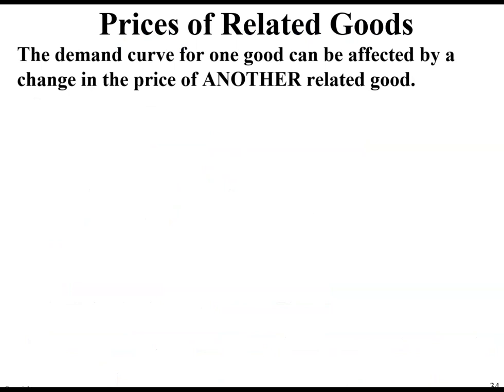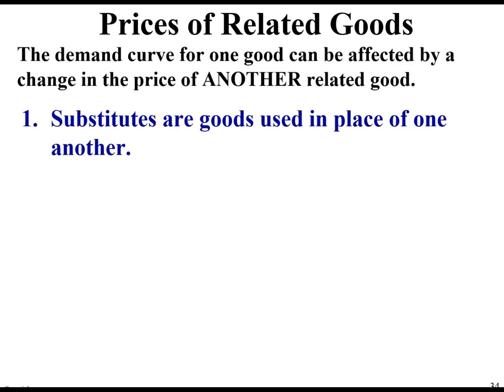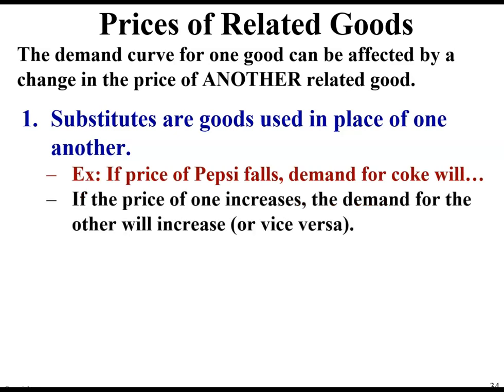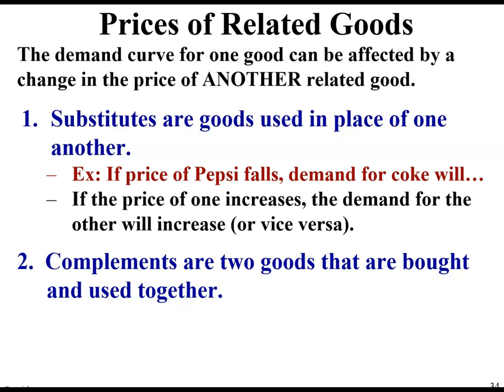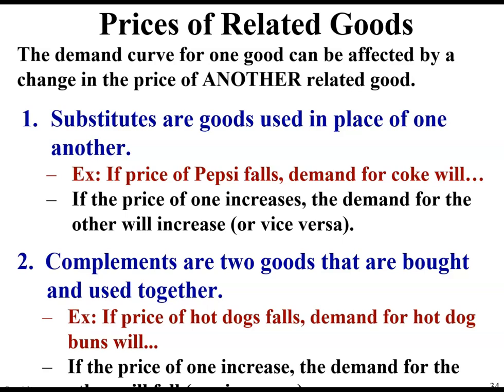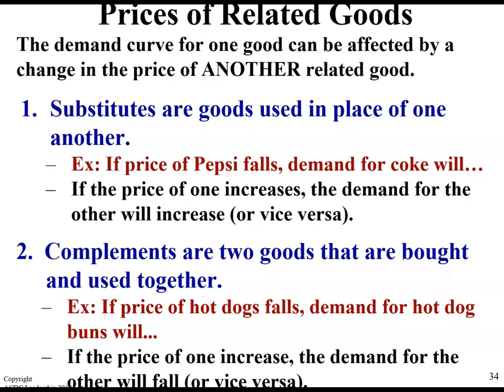What about prices of related goods? The demand curve for one good can be affected by a change in the price of another good. Substitutes are goods used in place of one another — if the price of Pepsi falls, the demand for Coke will probably go down. If the price of one good increases, the demand for the other will increase, or vice versa. Complements are two goods that are bought and used together. If the price of hot dogs falls, the demand for hot dog buns will go up. If the price of one increases, the demand for the other will fall, or vice versa.